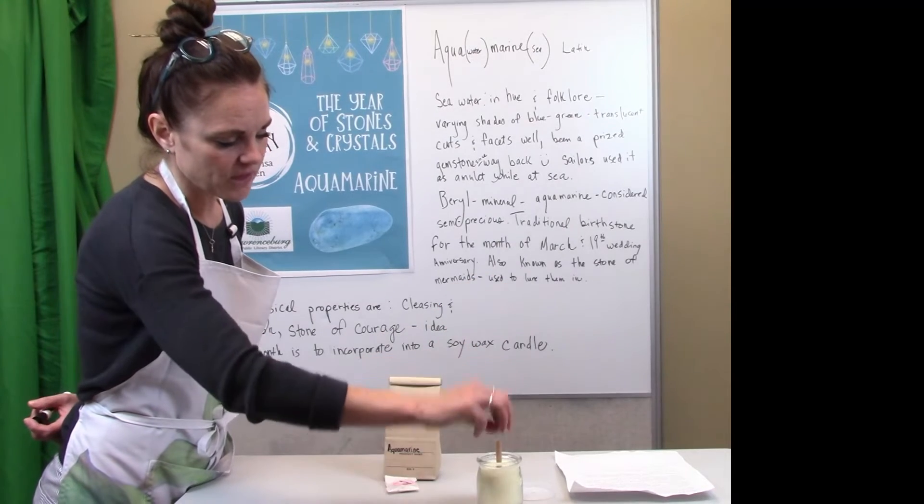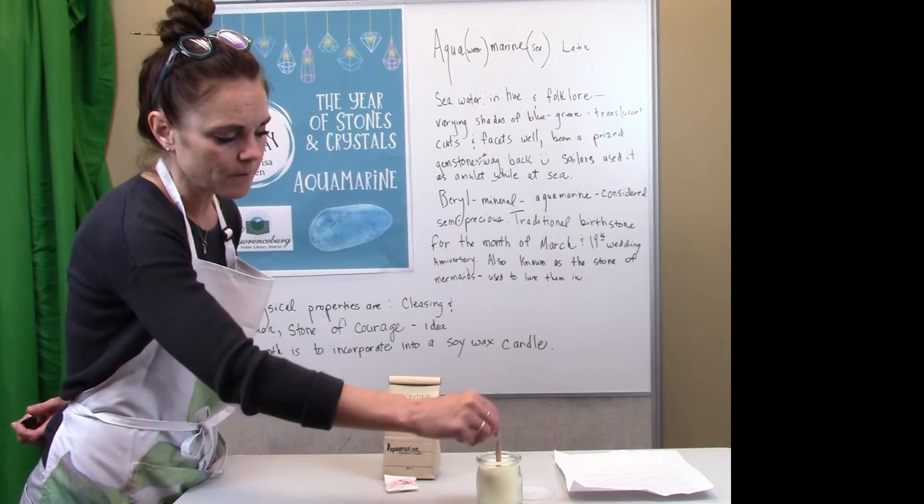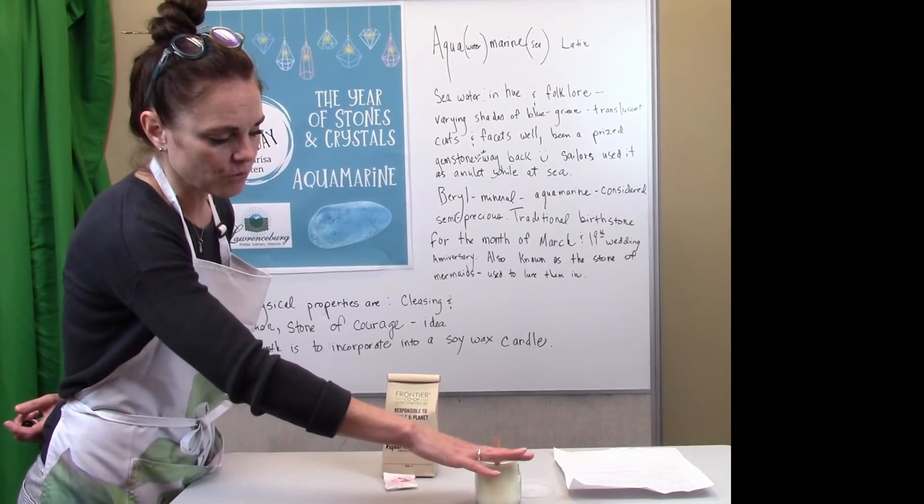And then we drop the stone mineral crystal or gem into the jar, and then we basically sandwich or layer it, and then we top it with the rest of the wax.